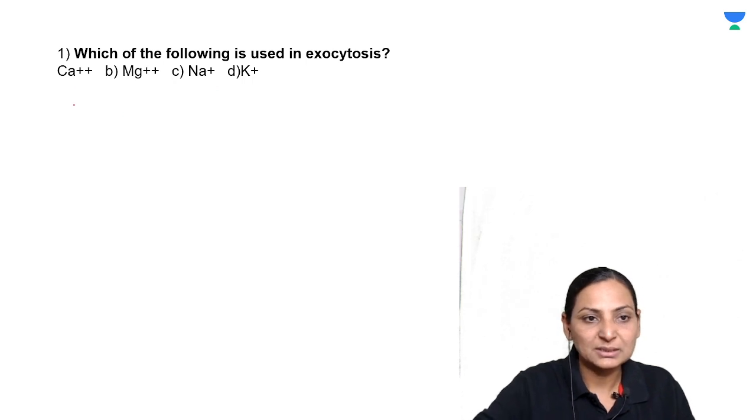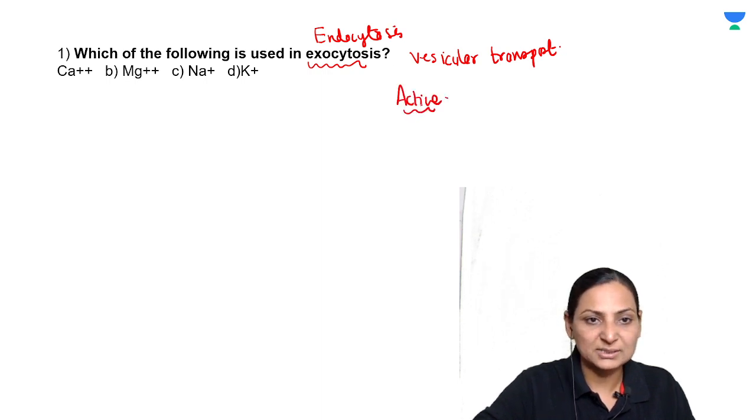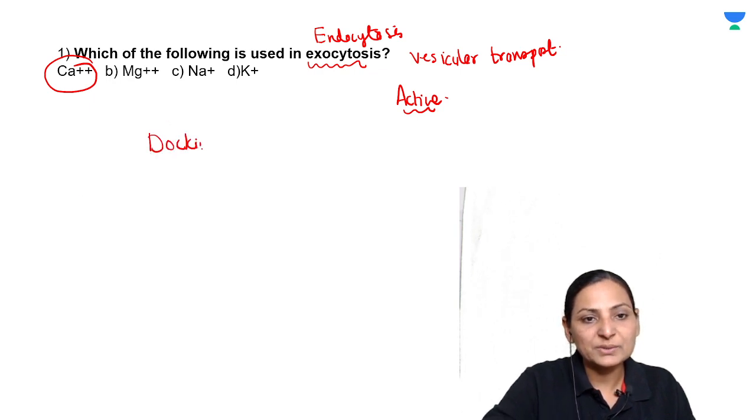Definitely when I say exocytosis it becomes your vesicular transport. Remember vesicular transport is exocytosis and endocytosis. Both of these are categorized as active processes, so they're not passive. They are active processes and they require an important ion that is calcium. Apart from this they require something called docking proteins, then you require clathrin and you require dynamin.